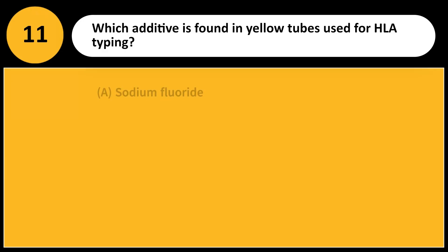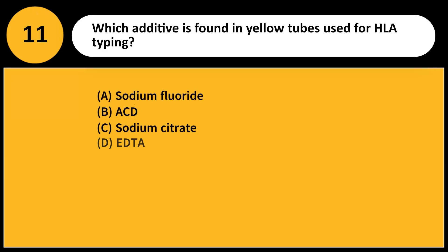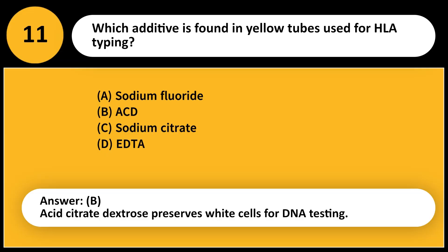Which additive is found in yellow tubes used for HLA typing? A. Sodium fluoride. B. ACD. C. Sodium citrate. D. EDTA. Answer: B. Acid citrate dextrose preserves white cells for DNA testing.